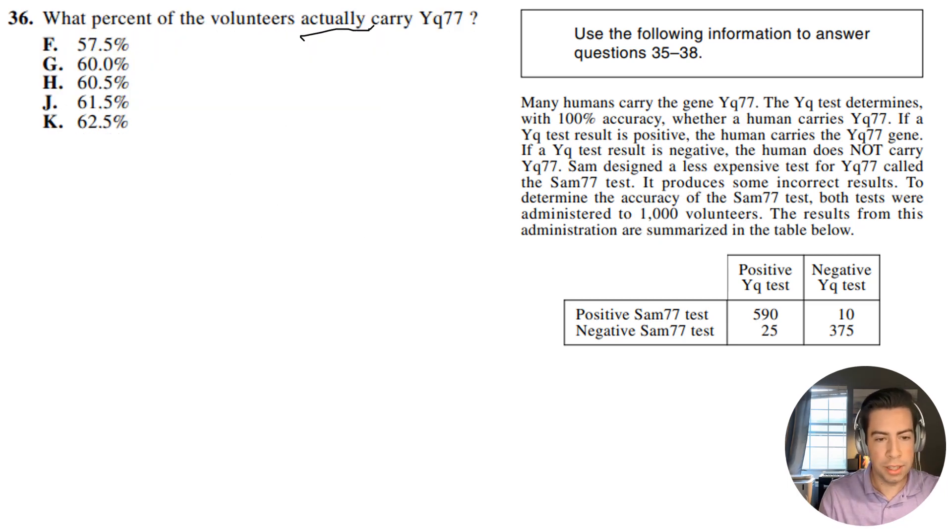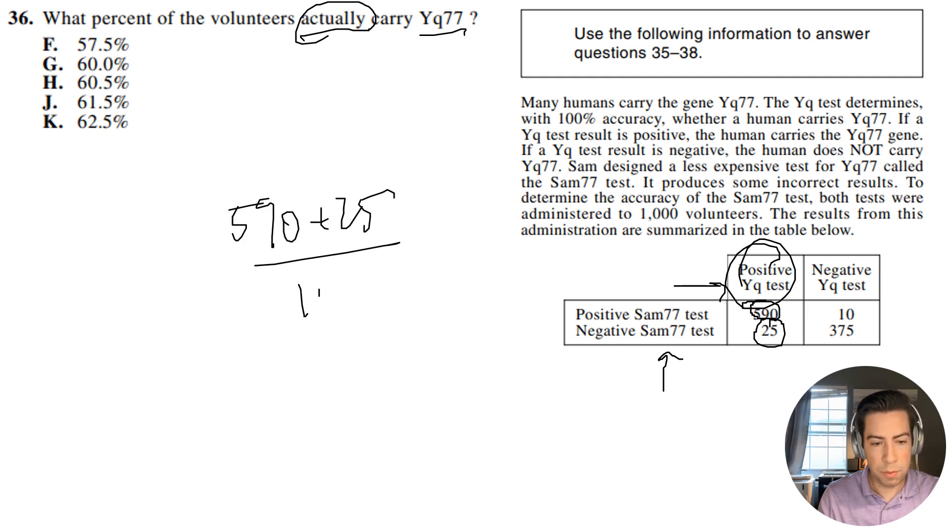What percent of the volunteers actually carry YQ77? So the only way that we'll know if they actually carry it is if they have a positive YQ test. So if we look at this right here, we see 590 of them have a positive YQ test. Is there anything else we need to keep in mind here? Yeah, so it's 590 and then 25. So even though it was negative on the SAM77 test, because it was positive on the YQ test, it's 100% accurate. So that has to be the case that they actually have it. So we're going to have 590 plus 25 divided by 1,000 multiplied by 100%. And these can kind of cancel down a little bit. So I'm going to get 615 divided by 10. And this is going to be 61.5%. So my answer is going to be J.